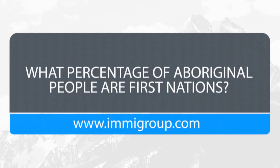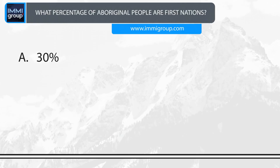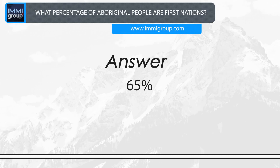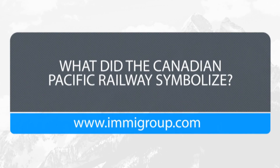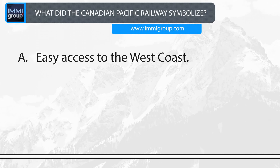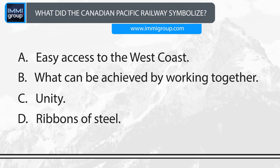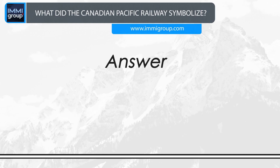What percentage of Aboriginal people are First Nations? A. 30%. B. 6%. C. 50%. D. 65%. Answer: 65%. What did the Canadian Pacific Railway symbolise? A. Easy access to the West Coast. B. What can be achieved by working together. C. Unity. D. Ribbons of steel. Answer: Unity.